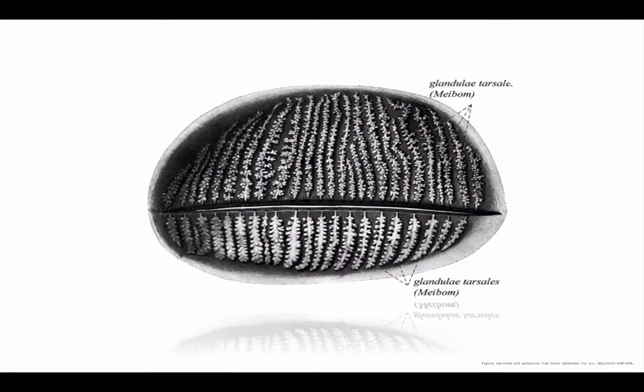The number of secretory acini in a meibomian gland is around 10 to 15, higher in the upper lid. The difference of secretory capacity of the upper lid versus the lower lid hasn't been investigated. However, Korb and Blackie have shown that the glands in the nasal region of the lid excrete the most oil. As meibum is generated, it fills the acini and moves along the central duct towards the surface.